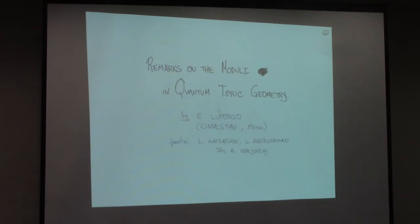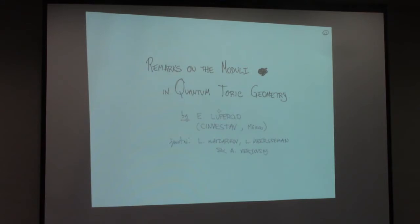Unlike ordinary toric varieties, which are rigid and don't admit a modular space, when you allow quantum toric varieties that generalize toric varieties, they have a nice modular space. I will explain what you have to do to understand this, and I will try to explain a very intriguing feature: while at first there does not seem to be a reason for it to be a complex orbifold, in essence it turns out to be a complex orbifold.